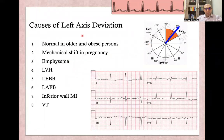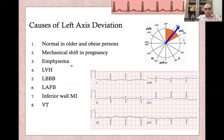What are the causes of left axis deviation? It can be normal in elderly or obese persons. Any mechanical shift such as in pregnancy will shift the heart and cause left axis deviation. Other causes include emphysema, left ventricular hypertrophy, left bundle branch block, left anterior fascicular block, inferior wall myocardial infarction, and some types of ventricular tachycardia.